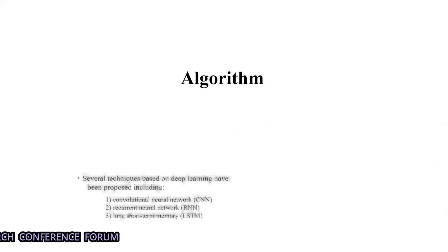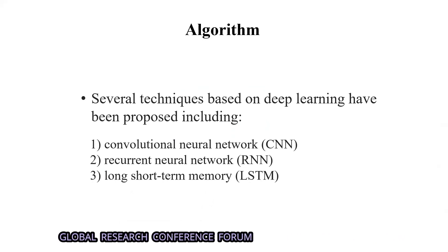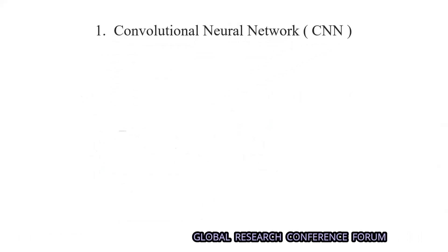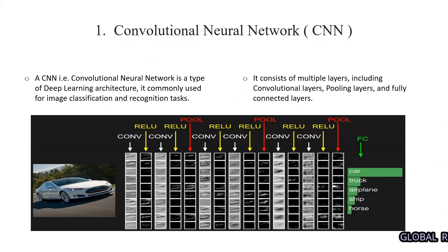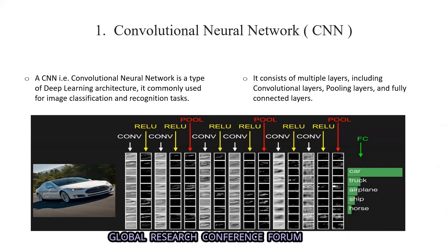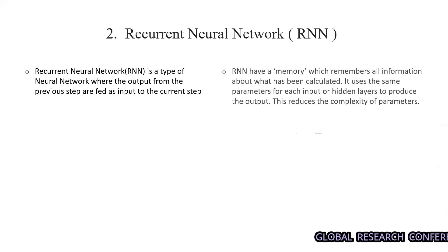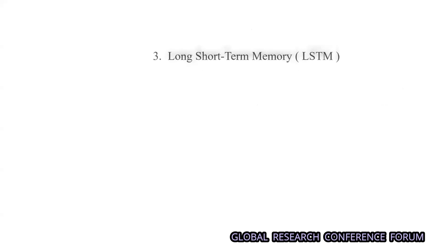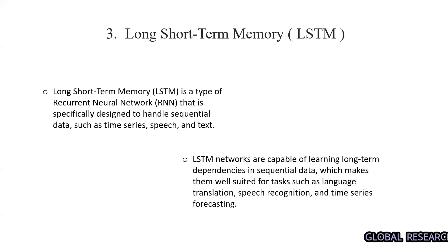We used three algorithms or techniques. The first is a Convolutional Neural Network (CNN), the second is a Recurrent Neural Network (RNN), and the third is Long Short-Term Memory (LSTM). The CNN is used for feature extraction from images. The RNN is used for sequential handling of data from the CNN to carry out the feature vector. LSTM is used to carry the feature vector throughout the long process using sequential methods.